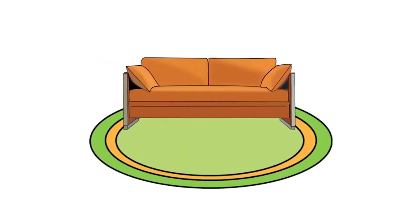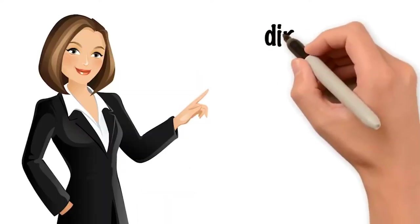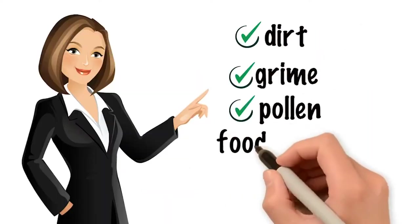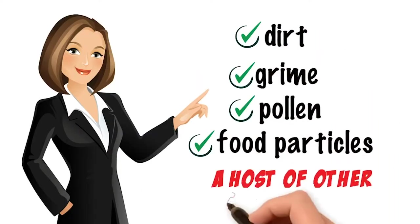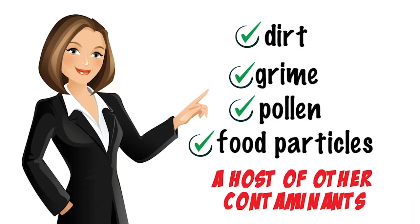Does your carpet or sofa need a thorough clean? Over time, your carpets or sofa will become ingrained with dirt and grime from the continuous trapping of dust, pollen, food particles, and a host of other contaminants. This can make your fabrics look old before their time.